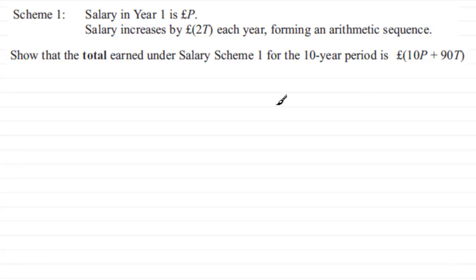So how are we going to do this? Well, we're in a position to work out the total of the salary for 10 years, so we'll just start by saying the total for 10 years equals. In the first year, a person's paid p pounds, so we'll just put that as p, and then in the second year it goes up by 2T pounds, so in the second year it's going to be p plus 2T.